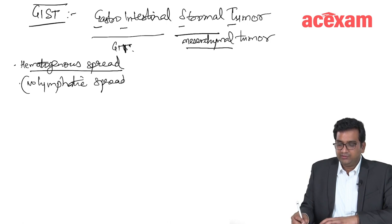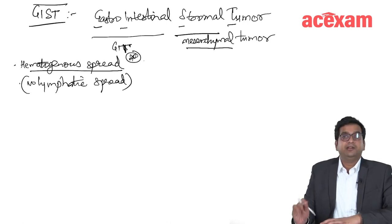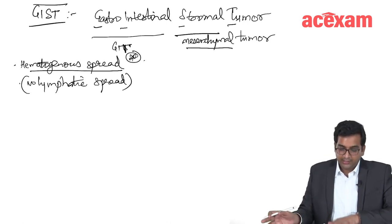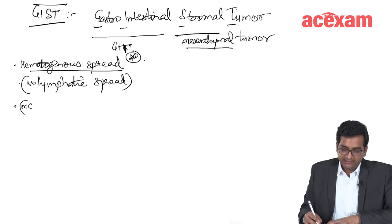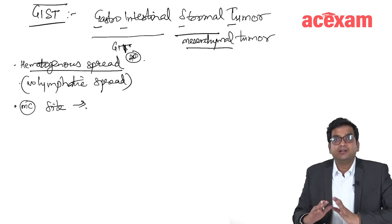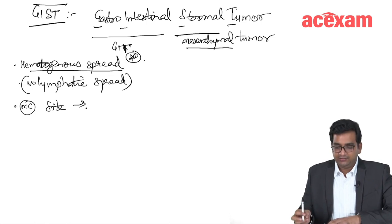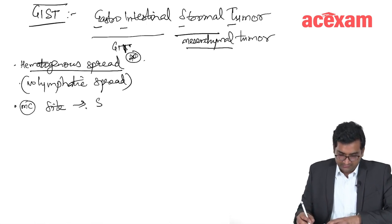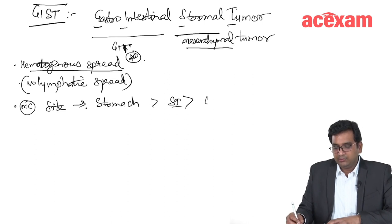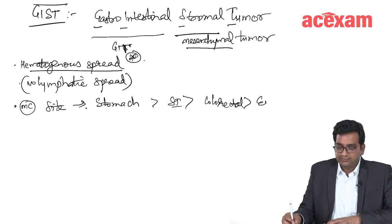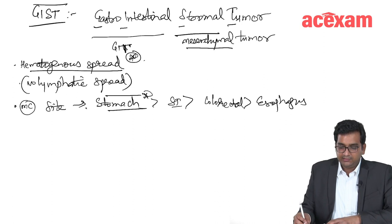The most common site of GIST is the stomach. Stomach is followed by small intestine, then colorectal, then esophagus. The most common site is stomach.